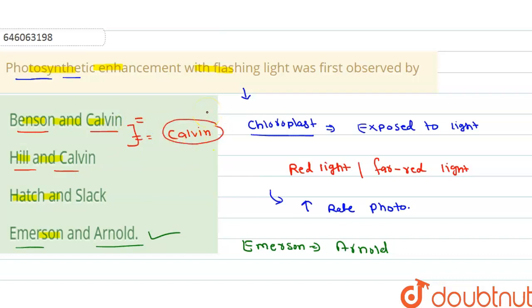Third option is Hatch and Slack. Hatch and Slack discovered the C4 cycle.